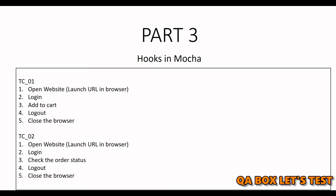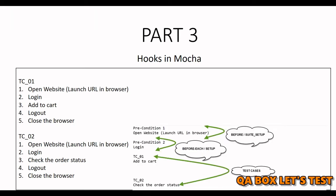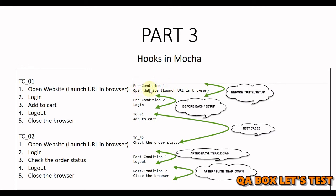We are going to make use of hooks in Mocha. We can define pre-condition one as open website, pre-condition two as login, then execute test case one to add to cart, followed by post-condition one and post-condition two. The same applies for test case two. This is how we organize our code in Mocha. Pre-condition one — launching the website or browser — happens only once, and similarly closing the browser happens only once. Login occurs before every test case because after each test case we log out.